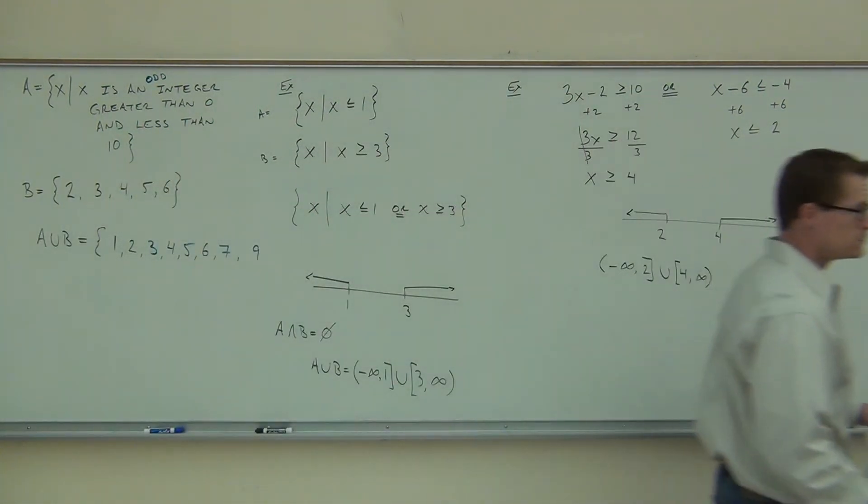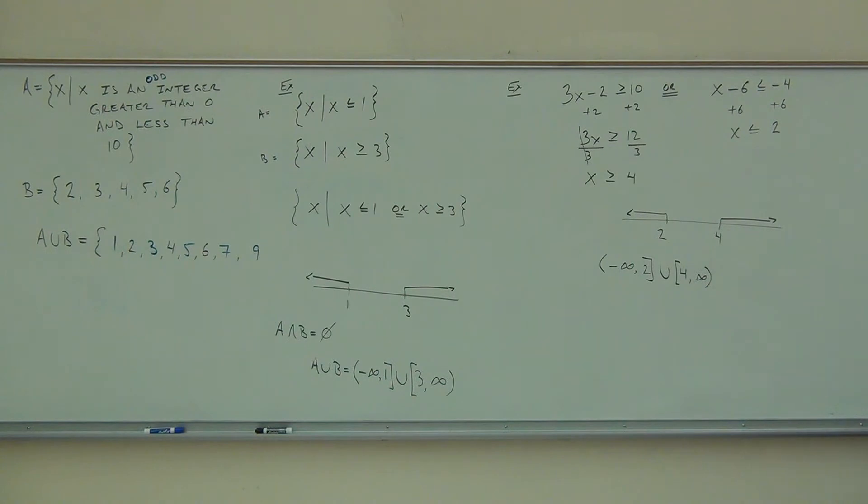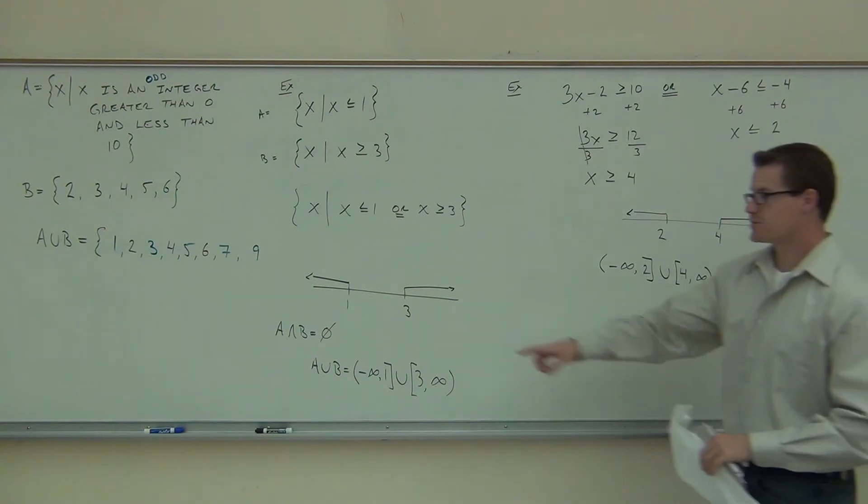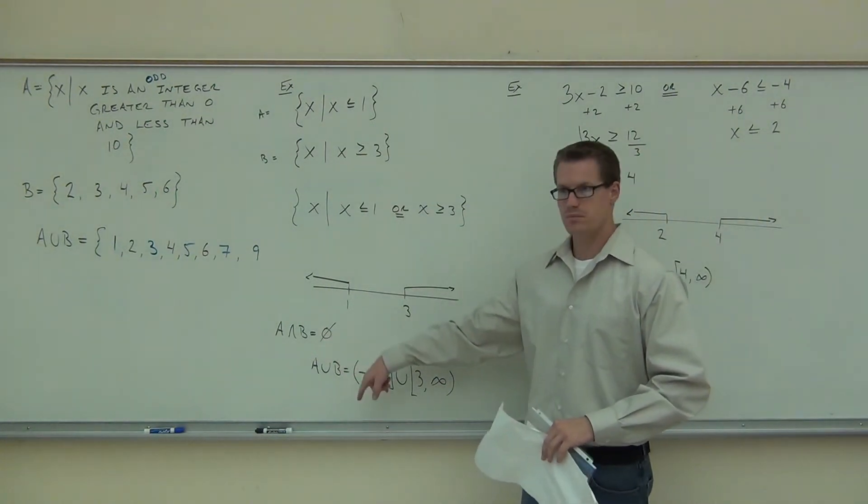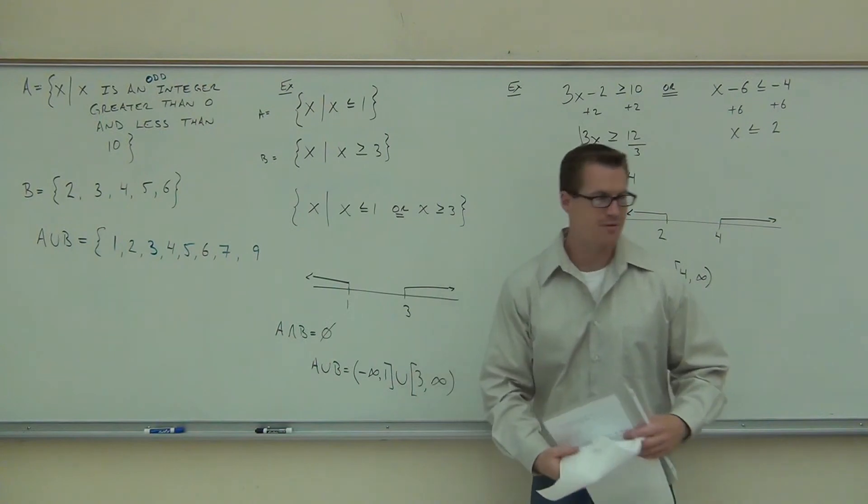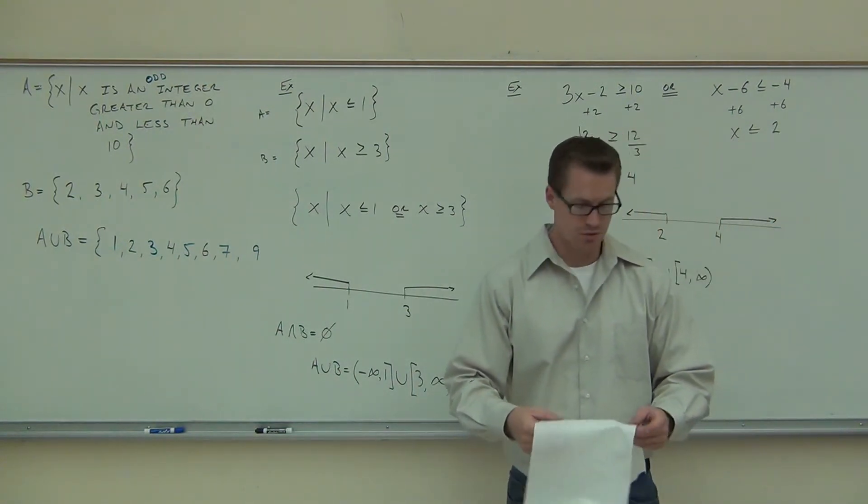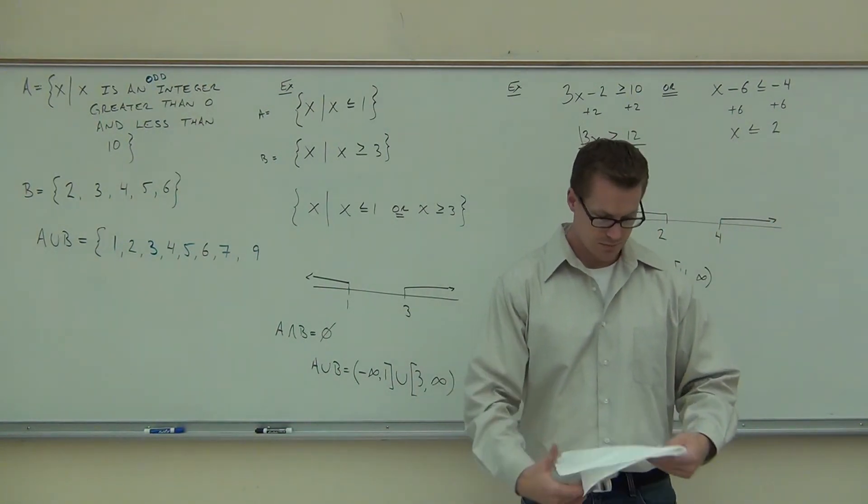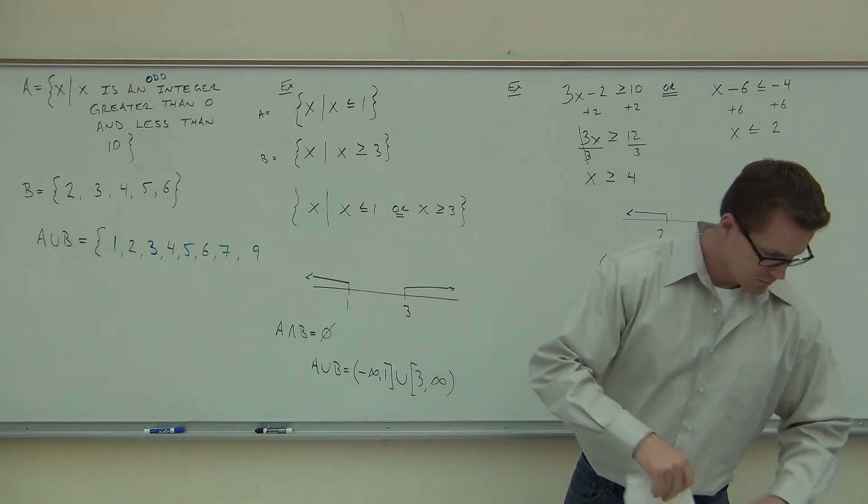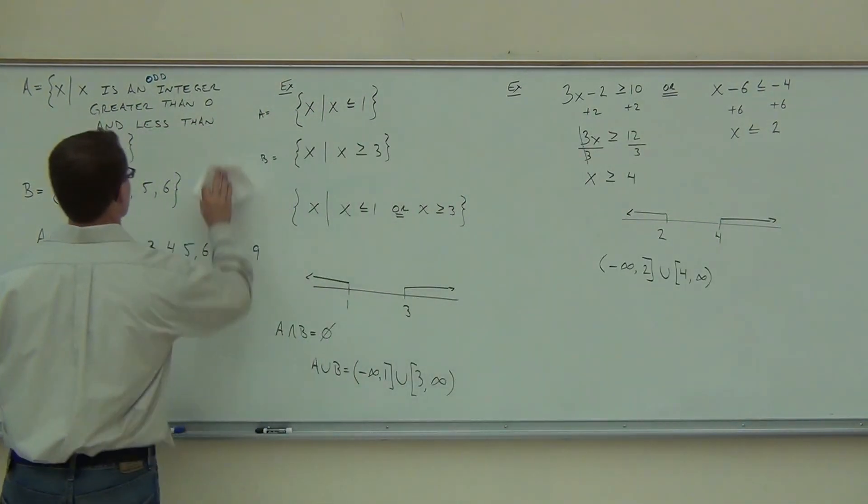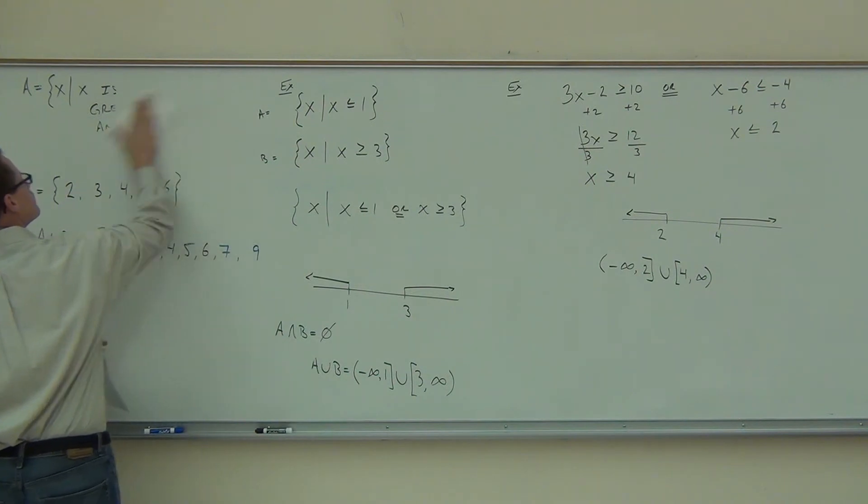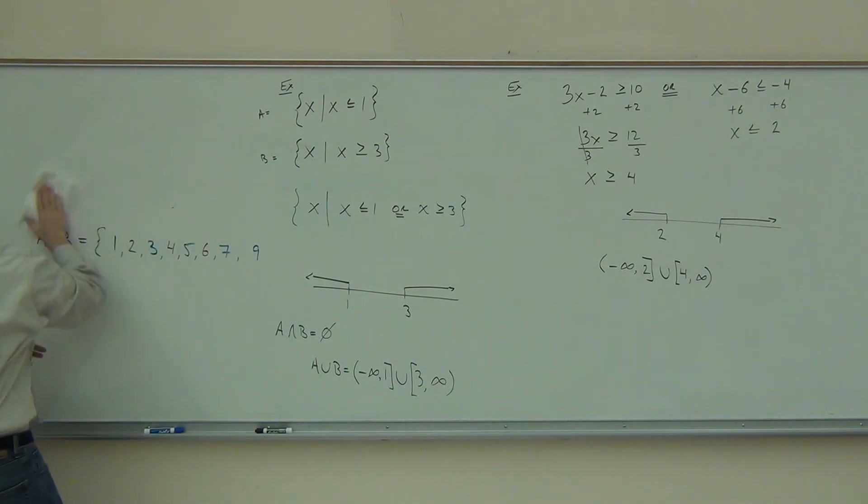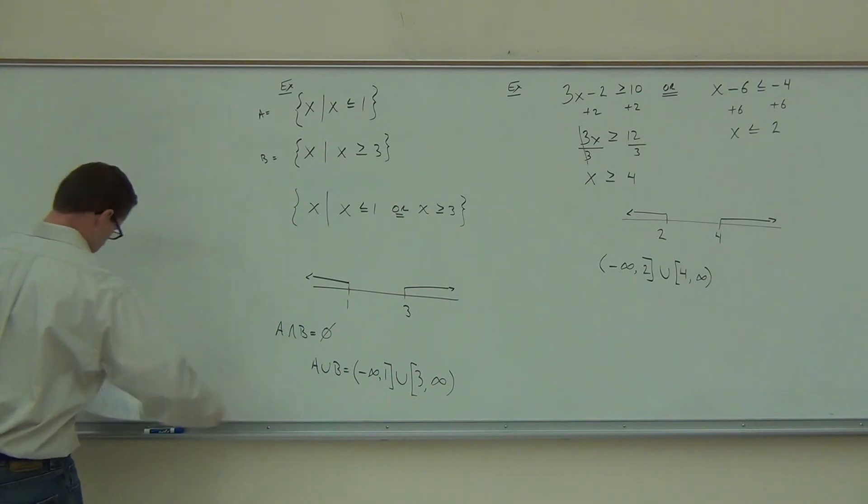By the way, with or, can you see that there will always be a solution? And there didn't have to be a solution. With or, you always have an interval. If you have an interval, you've got at least some solution.